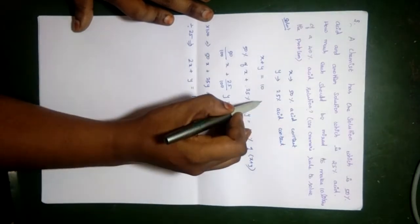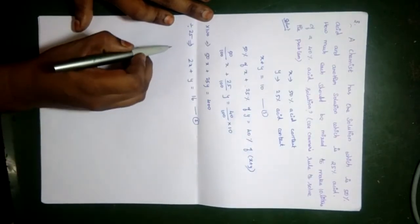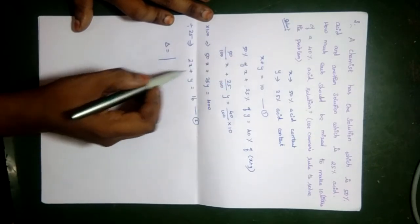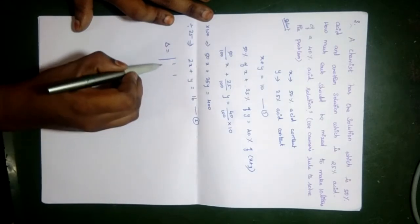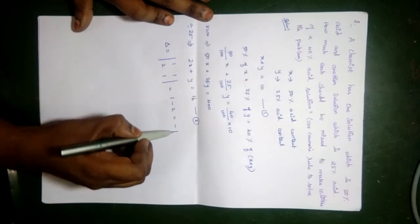Take this as equation 1 and this as equation 2. Now delta is equal to the determinant 1, 1, 2, 1. So 1 into 1 minus 2 equals minus 1.